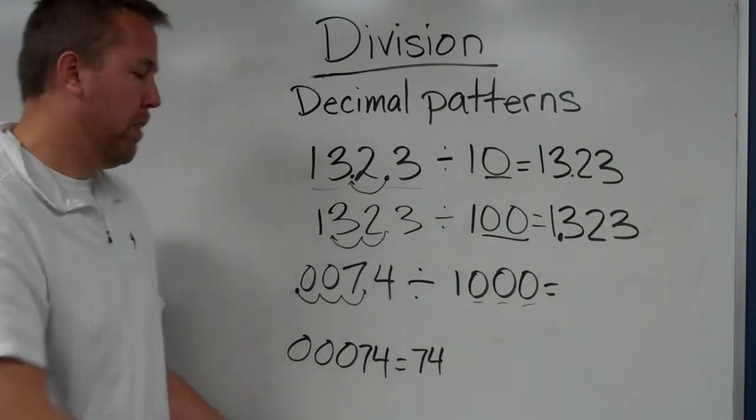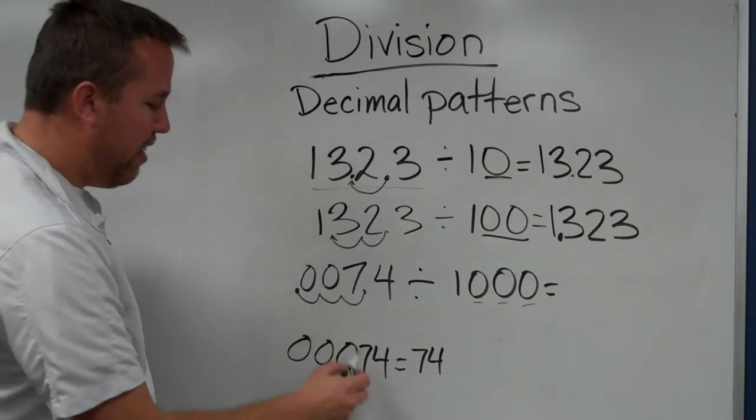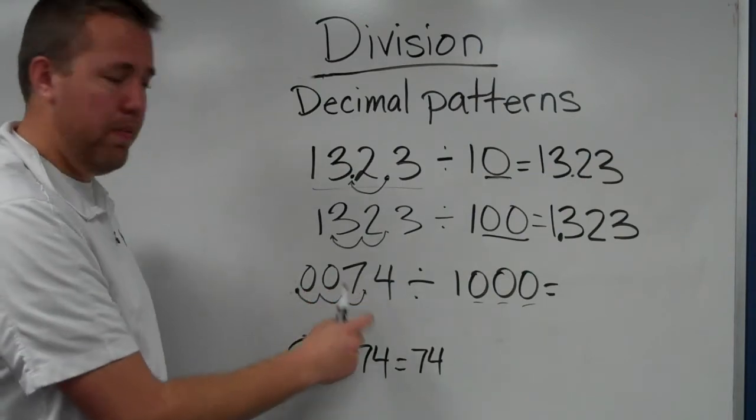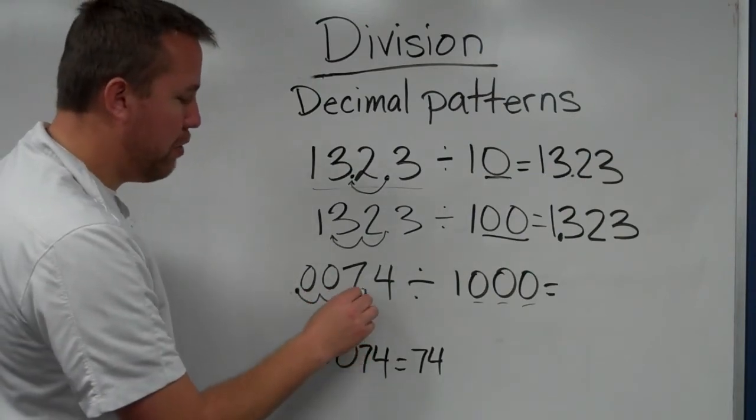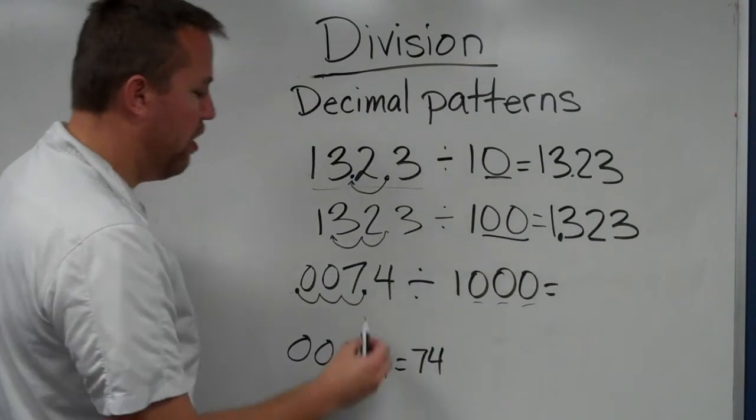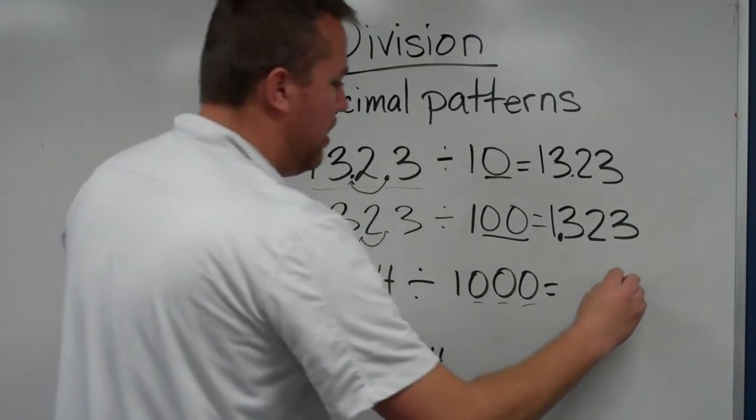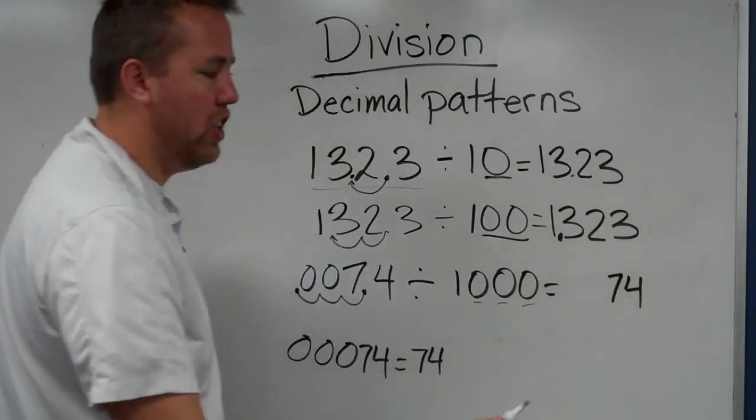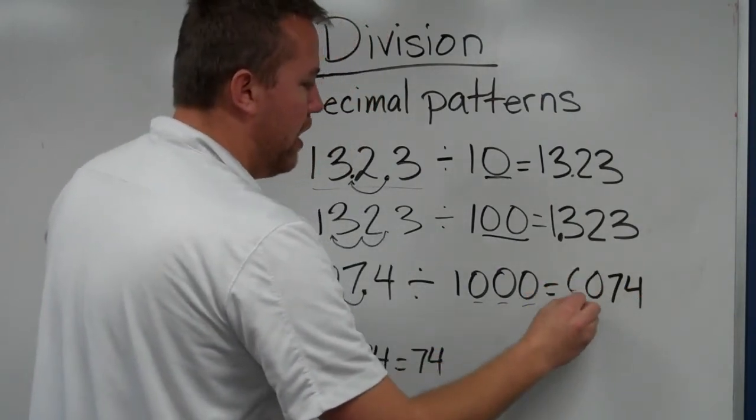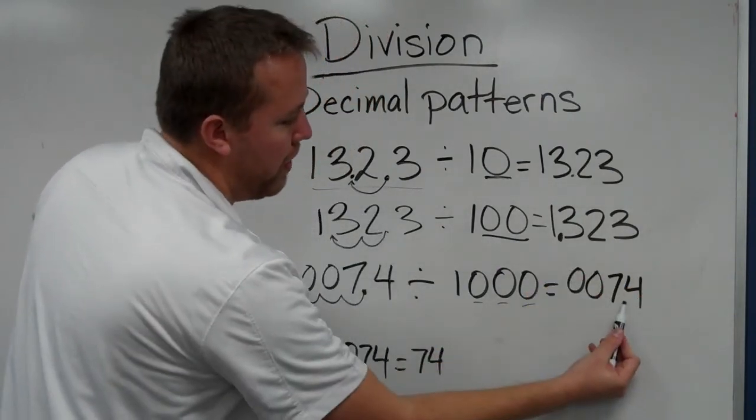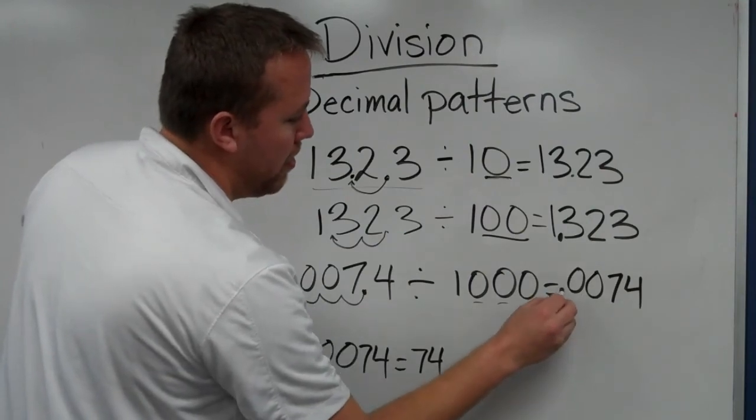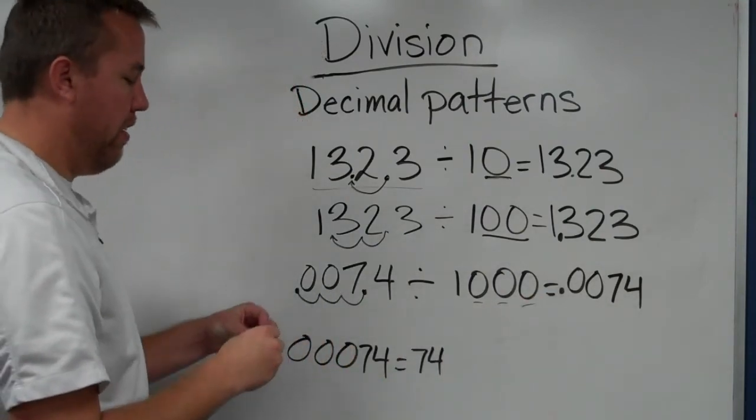So when we're moving it, and there isn't anything there, but we still need to move the decimal point three places, we can add those zeros. So, it's still seven-four. We're not changing any of that, but we needed to add two zeros to move it from here to one, two, three places. And get to there.